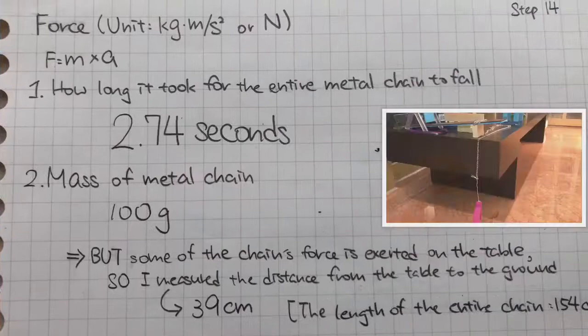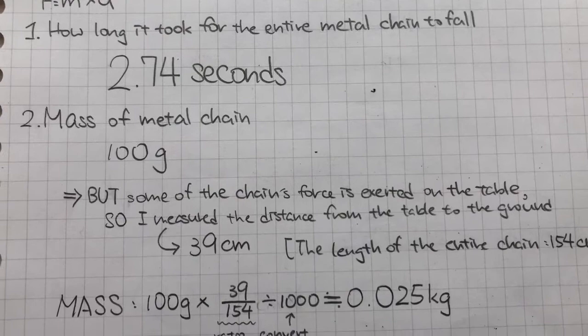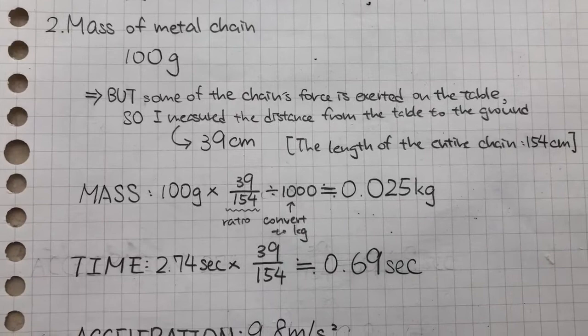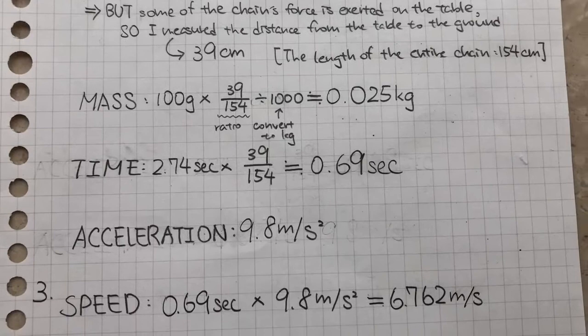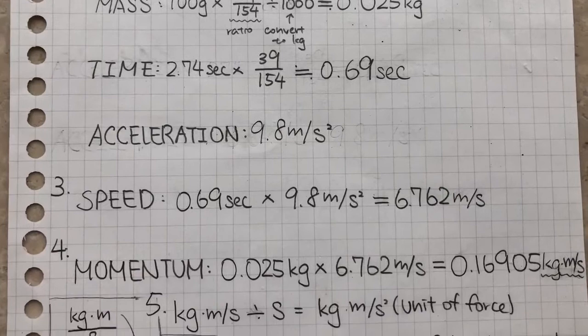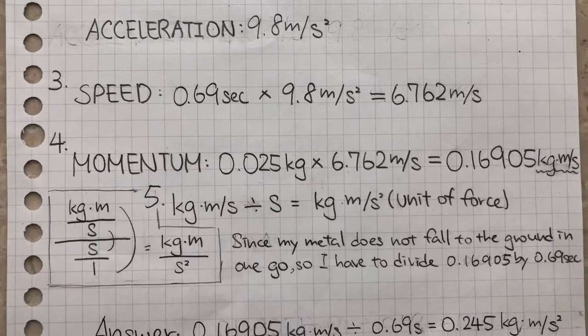To calculate the force exerted on the floor by the metal chain, I timed how long it took for the entire chain to fall and weighed the chain. Then I measured the distance from the table top to the ground. Since some of the chain's force is exerted on the table, I only need a portion of the chain's weight and the time it takes. It gives me a ratio of 39 over 154. So the mass of the portion of the chain is 0.025 kilograms and the time it takes to fall is 0.69 seconds. I timed acceleration in time to get the speed. Then the time, speed, and mass will get the momentum. Next I divided it by time again in order to get the force which is 0.245 newtons.